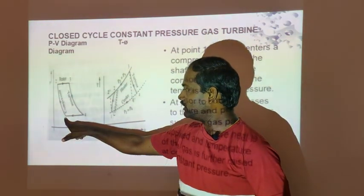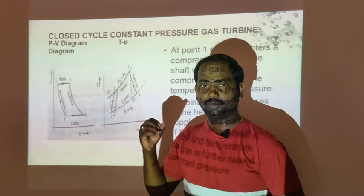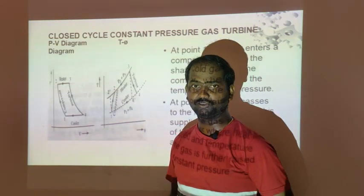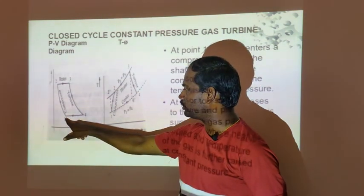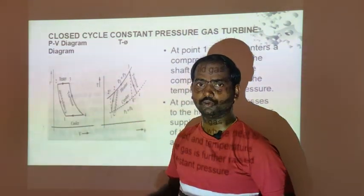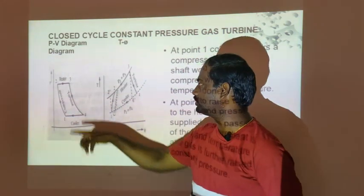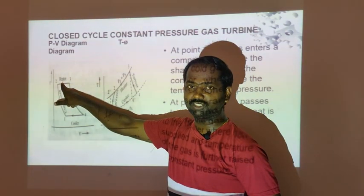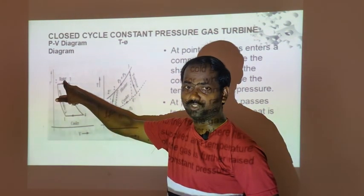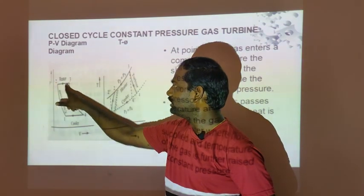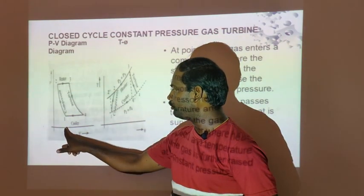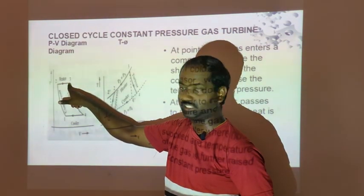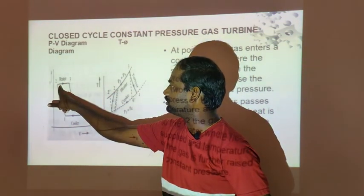We have processes 1-2 for the compressor: pressure rises from P1 to P2, and temperature also rises. Then process 2-3 represents heating at constant pressure P2, where volume expands from V2 to V3.